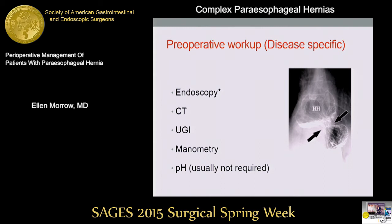A combination of the other studies you'll usually want to combine to evaluate your patient's disease process. pH I won't address further beyond this slide. If you were seeing a patient who had a type 1 sliding hiatal hernia, then pH would be a mandatory part of the workup, because that would be your main indication to operate. But for a paraesophageal or type 2, 3, or 4 hernia, generally the hernia itself is more the indication to operate, and so pH can be helpful to define a baseline for patients presenting primarily with reflux symptoms, but is not absolutely mandatory.